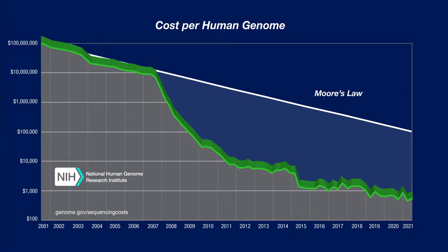This is something people may be less familiar with — the cost of sequencing one human genome from 2001, which was $100 million, to today, which is just under $1,000. This is exponential decline, and as you can see, it's faster than Moore's Law. So biotechnology is accelerating faster right now than digital technology.